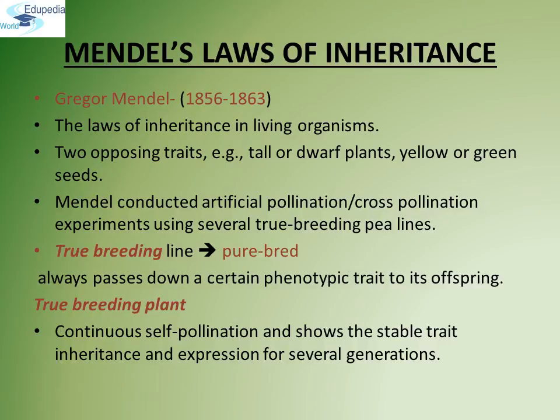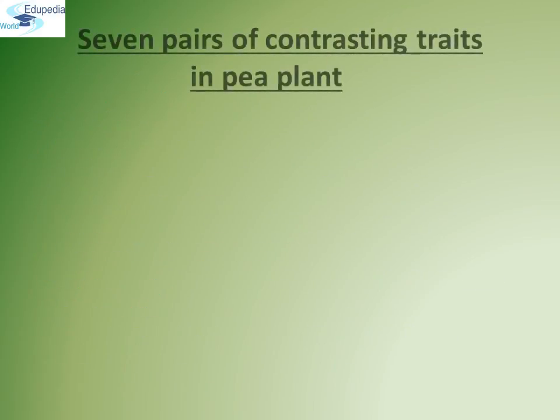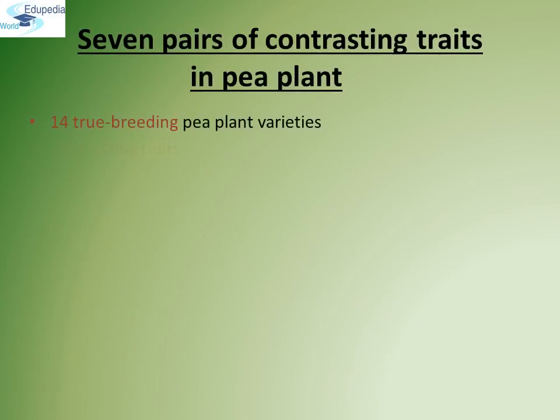What is a true breeding plant? A true breeding plant is a plant which continuously self-pollinates and shows the stable trait of inheritance and expression for several generations. Mendel studied seven pairs of contrasting traits in pea plants.